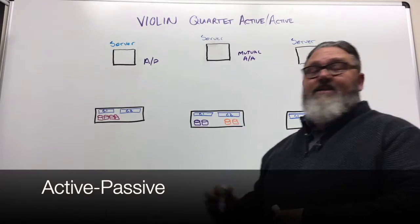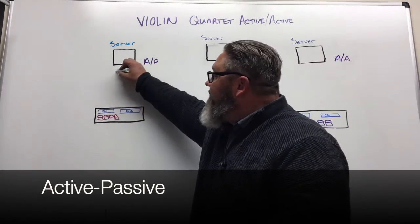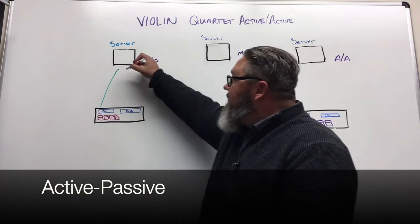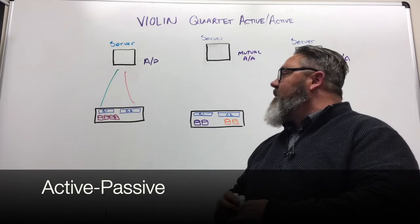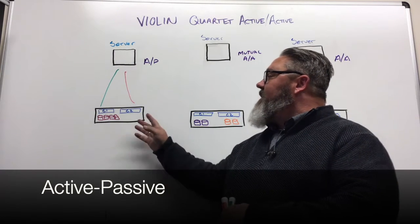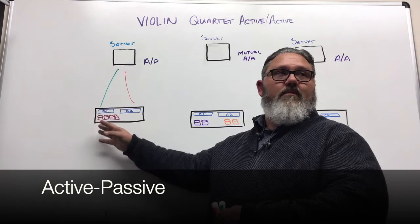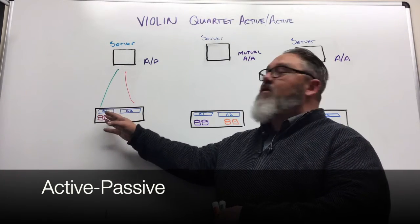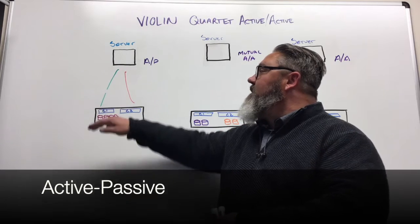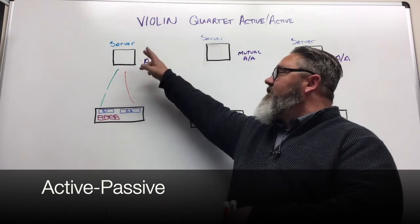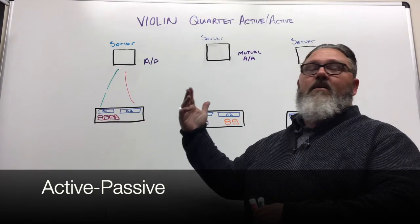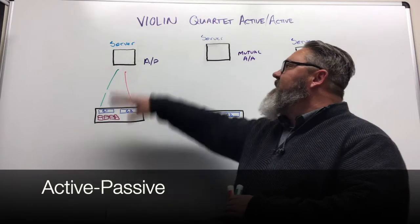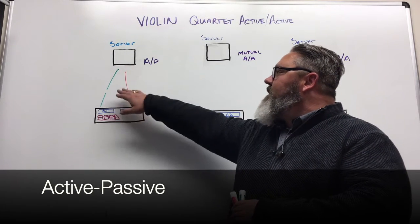In the active-passive solution, you've got an active path to one controller and a standby path to the secondary controller, meaning that all LUNs or volumes are contained and controlled by one controller. In the event of a path failure — whether you lose a path due to an HBA failure, a network connection issue, or some sort of infrastructure problem —